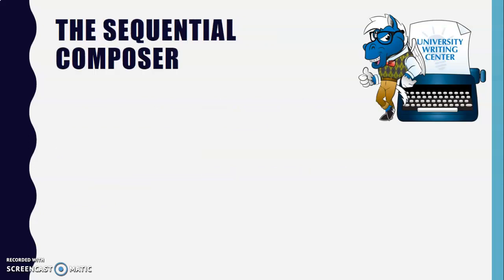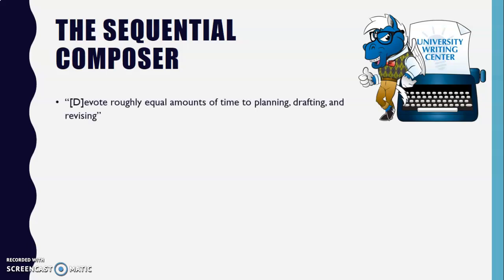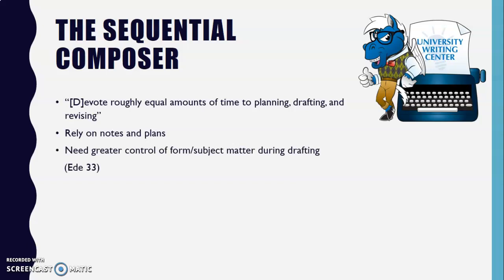The next type of writer is a sequential composer. These writers devote roughly an equal amount of time to planning, drafting, and revising. Sequential composers typically rely on written notes and plans to give shape and force to their ideas. And unlike heavy revisors, sequential composers need to have greater control over form and subject matter as they draft. What that means is these writers often slowly squeeze out paragraph after paragraph, re-reading and revising as they draft, working from outlines, and planning ahead.